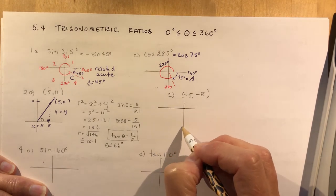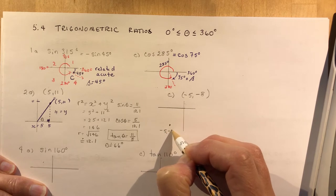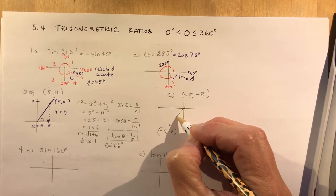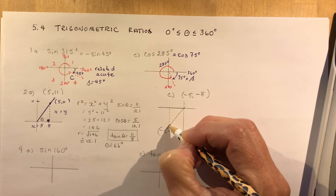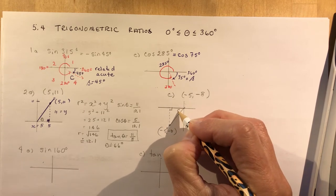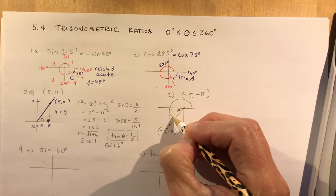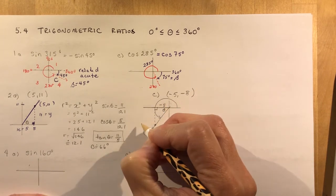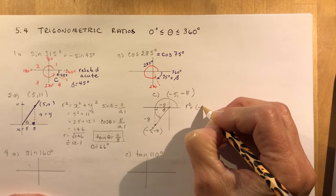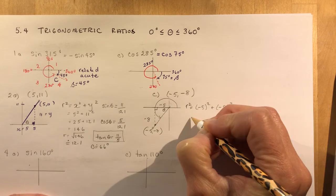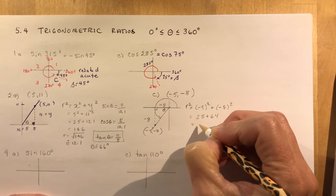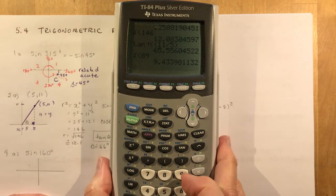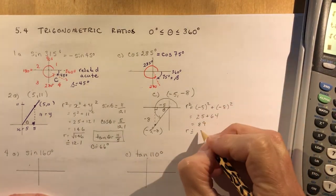Let's try one more: point (-5, -8). So x = -5 and y = -8 — doesn't matter how accurate your drawing is, just be in the right quadrant. Here's my terminal arm; I drop a perpendicular up to the x-axis and this is angle theta. r² = (-5)² + (-8)² = 25 + 64 = 89, so r ≈ 9.4.